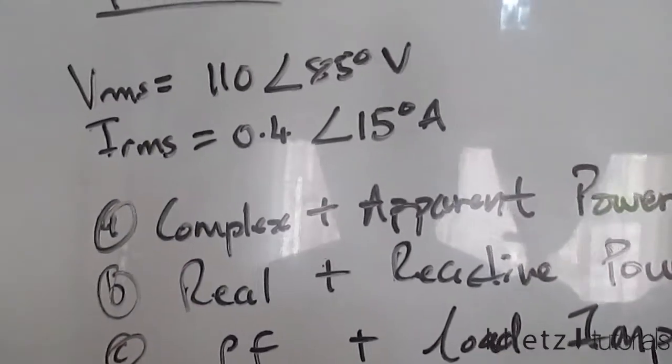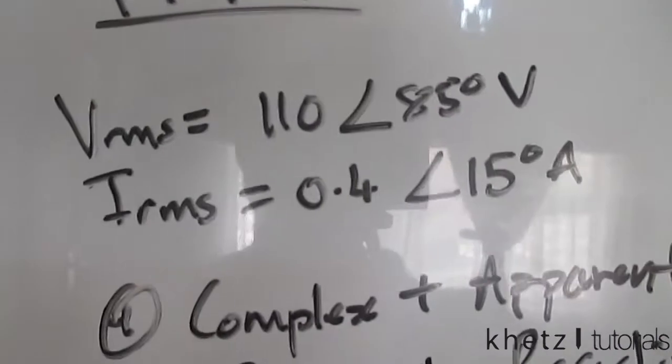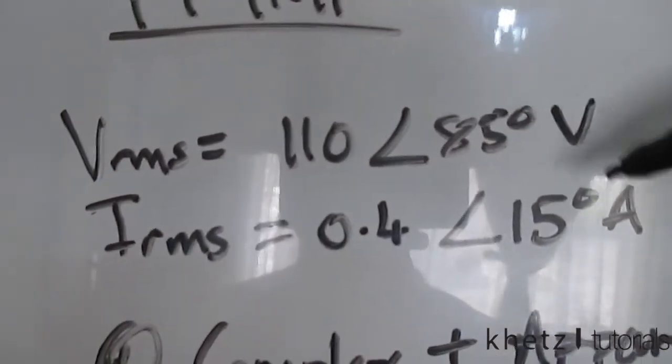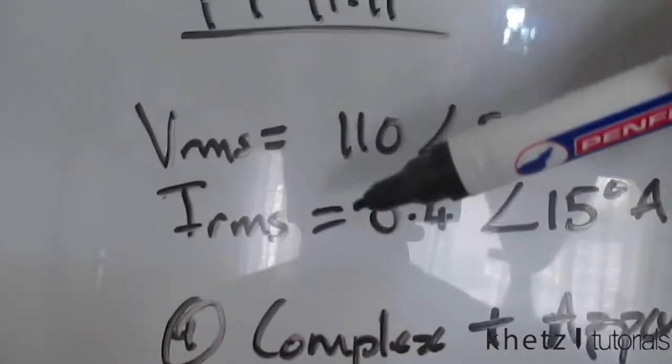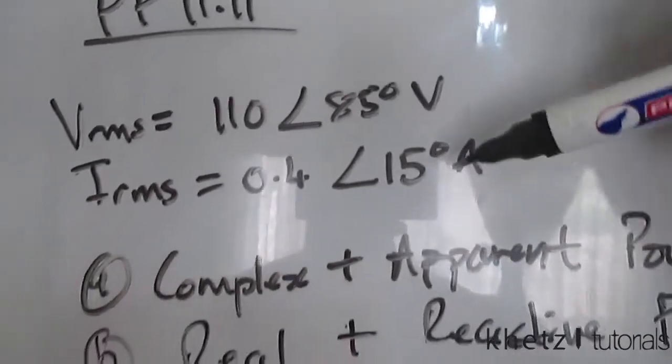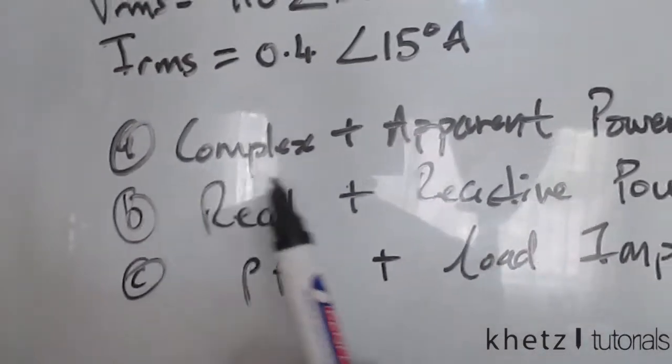So given these two values, we are told that for a load we have a V_rms of 110 with an angle of 85 degrees, as well as an I_rms of 0.4 with an angle of 15 degrees in amps. The first part of the question is asking us to find the complex as well as the apparent power.